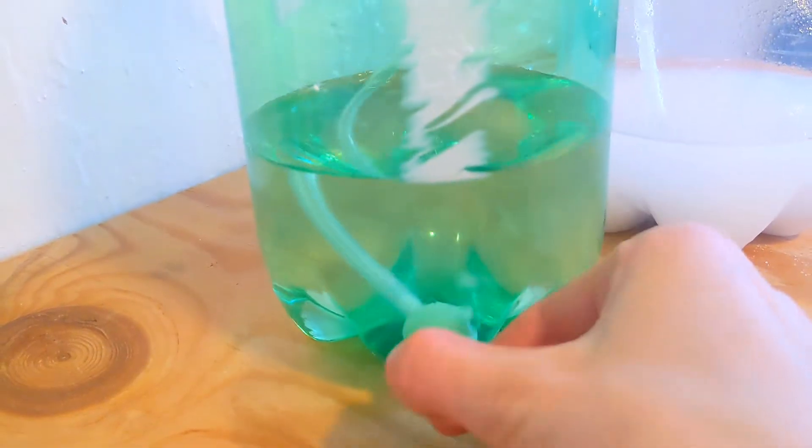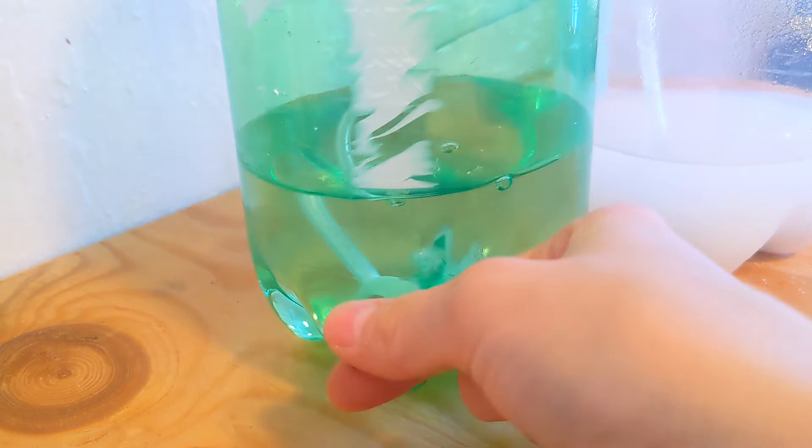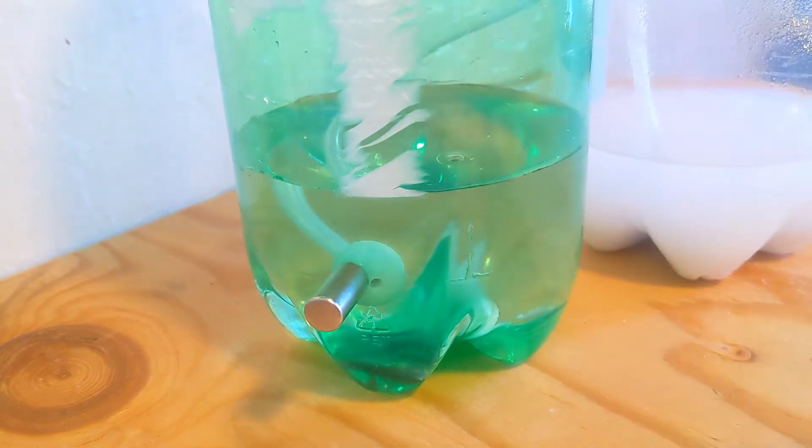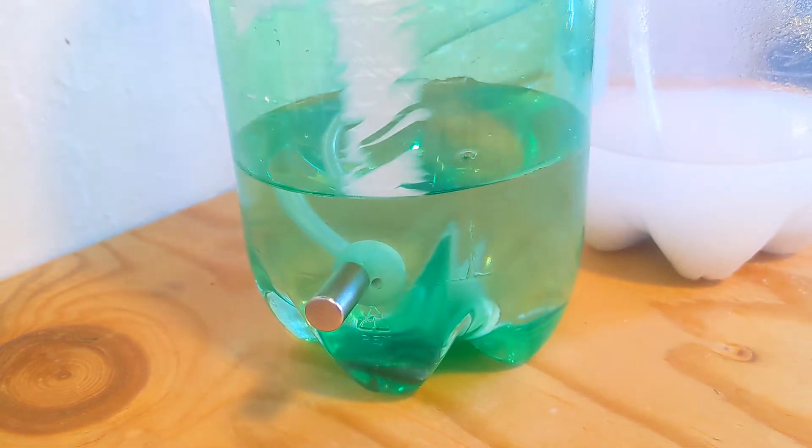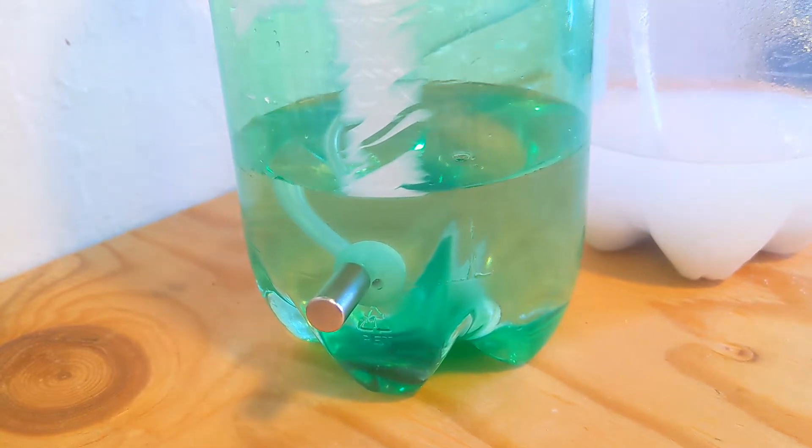You can also use the magnet to pull the acid-absorbing ball in and out of the solution. It should normally be in the solution to start the reaction and when the pressure is in the green scale. It should be out of the solution when you need to stop the reaction.